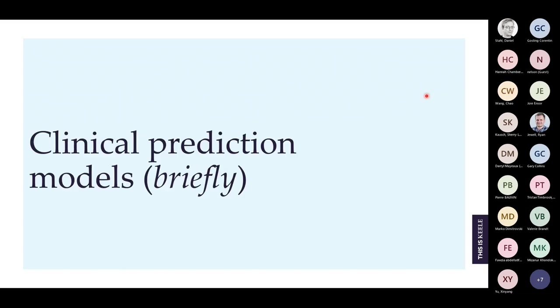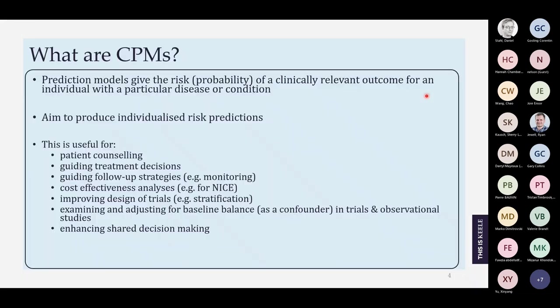Clinical prediction models aim to give us individualized risk predictions for a particular outcome for a particular disease or condition, and they're usually multivariable — taking in multiple patient characteristics like genetic factors or basic characteristics like sex and age. These individualized predictions are really useful for guiding treatment decisions, cost-effective analyses, and all sorts of things. It's also a really popular thing to do nowadays: develop a prediction model.